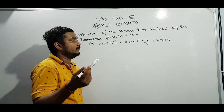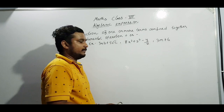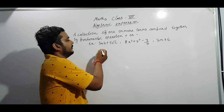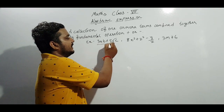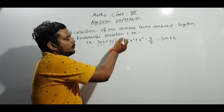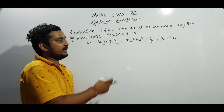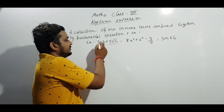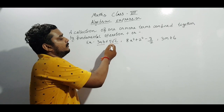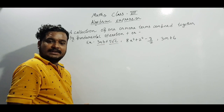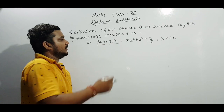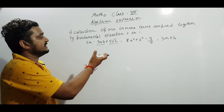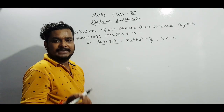We are having the collection of one or more terms. For example, 3ab plus 5 root over c. This is the collection of two terms — 3ab is the first term and 5 root over c is the second term. Whenever we find any expression in this particular order, that is called an algebraic expression.